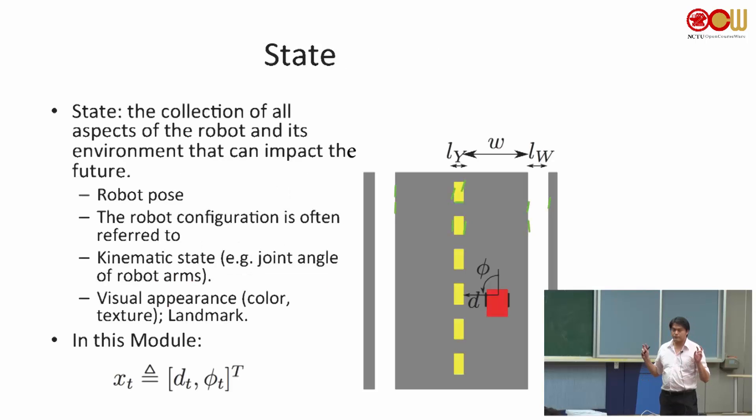This is the definition of a state. So when people in robotics talk about state, they refer to the state as the collection of all aspects of the robot and its environment that can impact the future. This is a very general definition. It could include lots of different things. One of the most popular commonly used is the robot pose. In 2D it could be just the X and Y and maybe the rotation, the yaw. And in 3D, it could be X, Y, Z and pitch, yaw, and roll. It becomes six degrees of freedom.